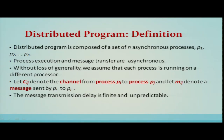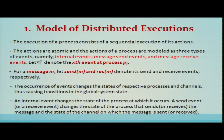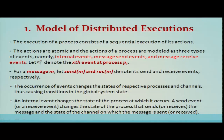Channel: Let Cij denote the channel from process Pi to process Pj, and let Mij denote the message sent by process i to process j. We assume the message transmission delay is finite but unpredictable. Models of distributed execution: The execution of a process consists of sequential execution of its actions. The actions are atomic and modeled as three different types of events: internal events, message send events, and message receive events.